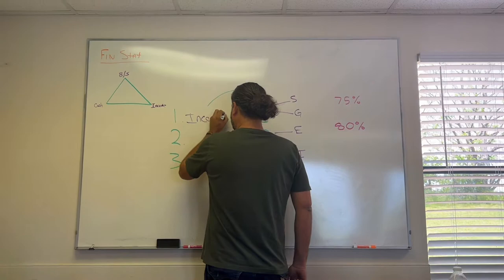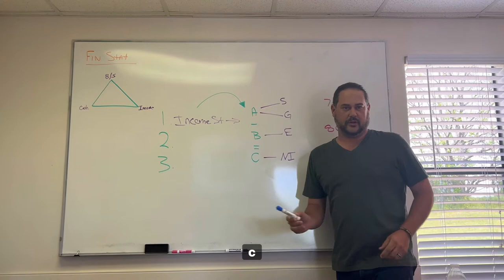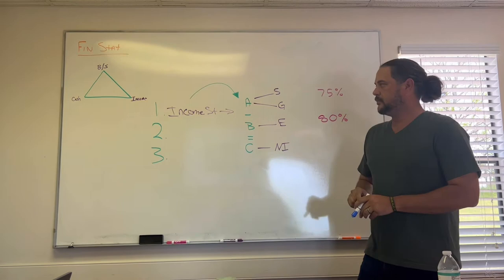So the income statement is simply a formula. The formula is A minus B equals C. Revenue minus expenses equals profit. Now let's take it just another step.